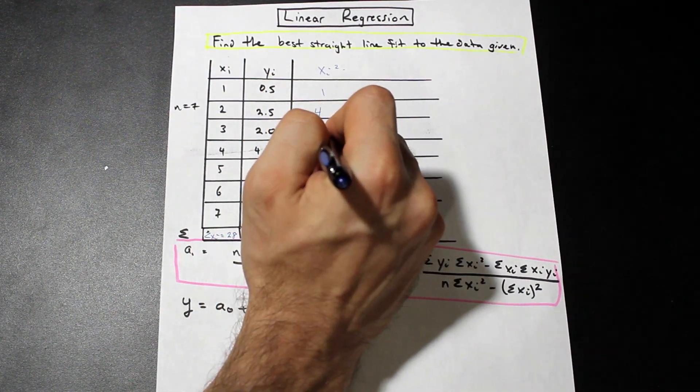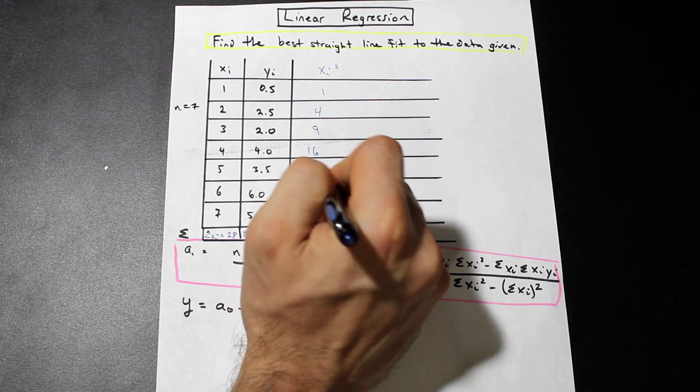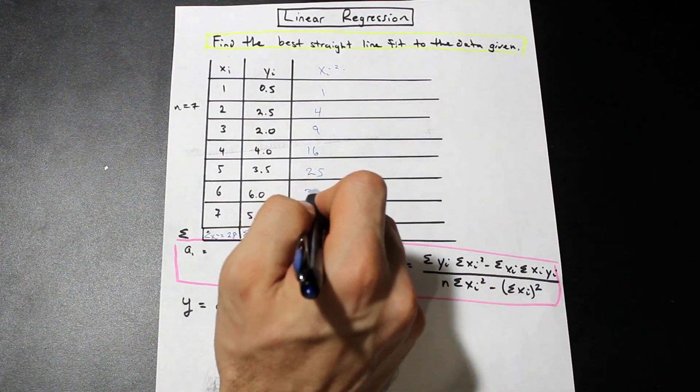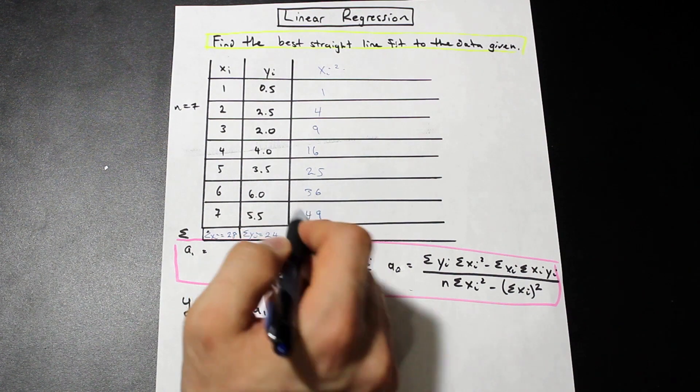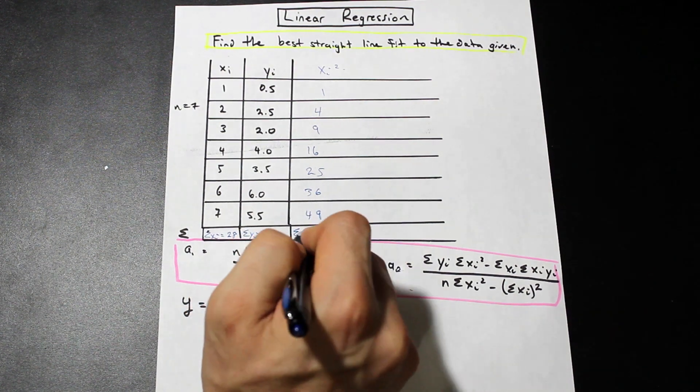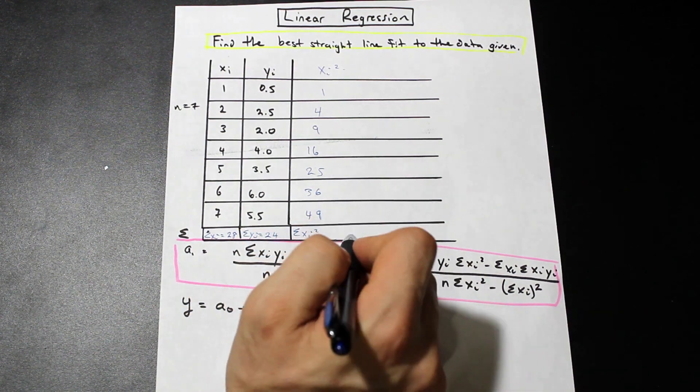So we have 1, 4, 9, 16, 25, 36, 49. And if we add all of these up, we have the summation of xi squared is equal to 140.